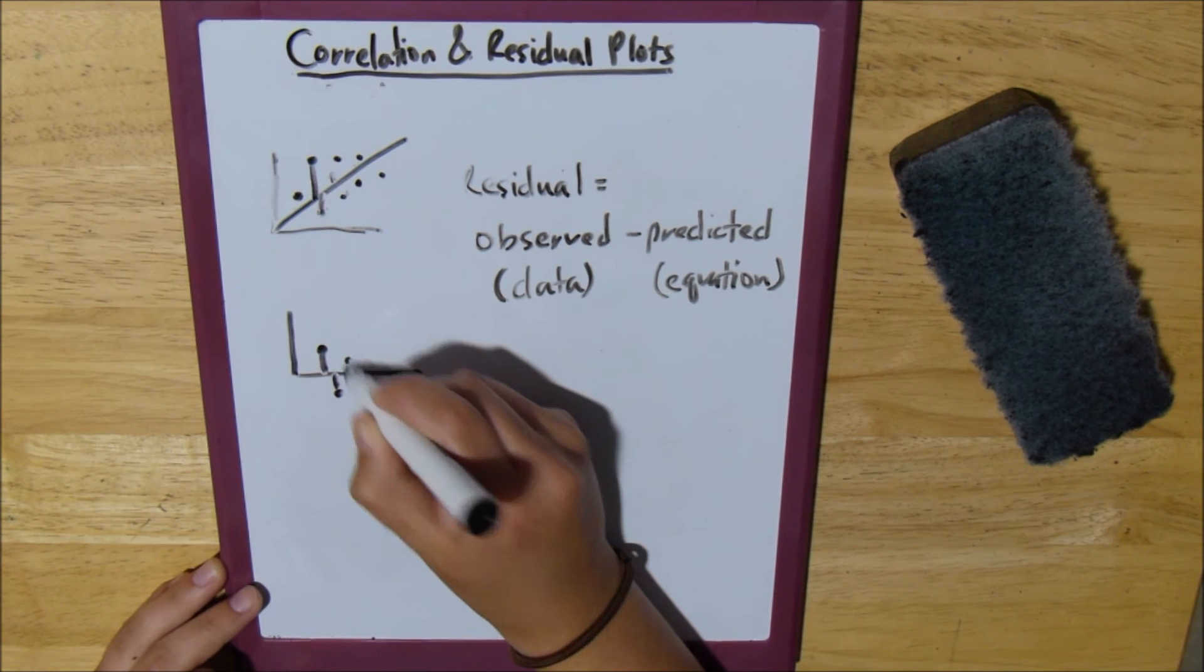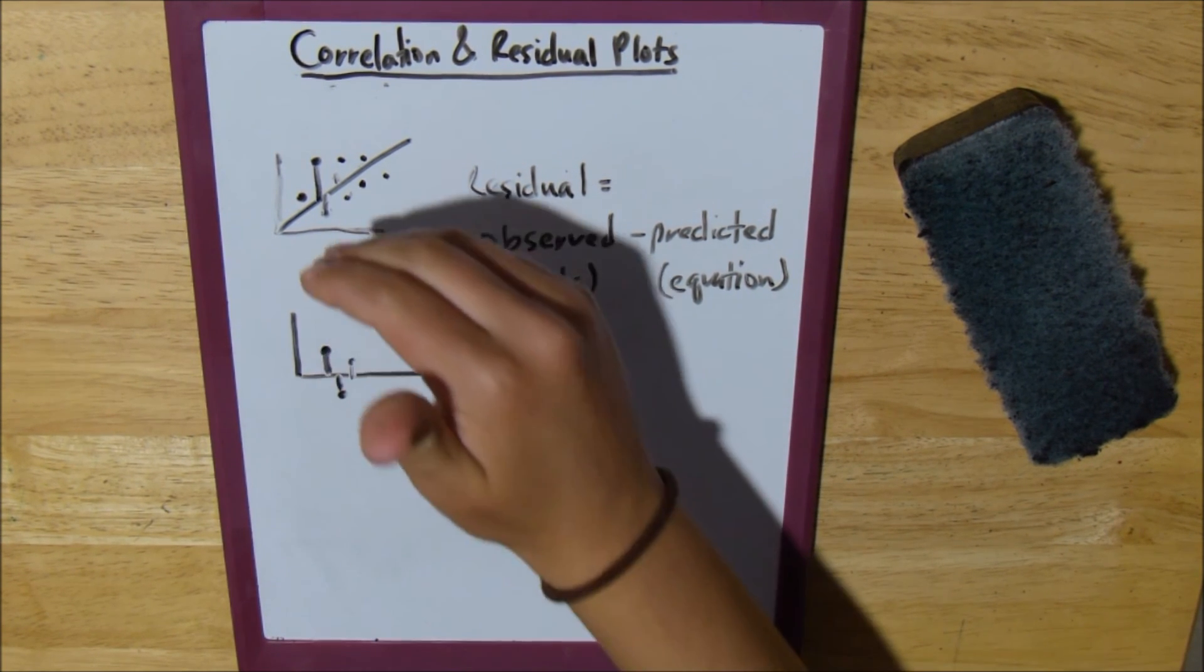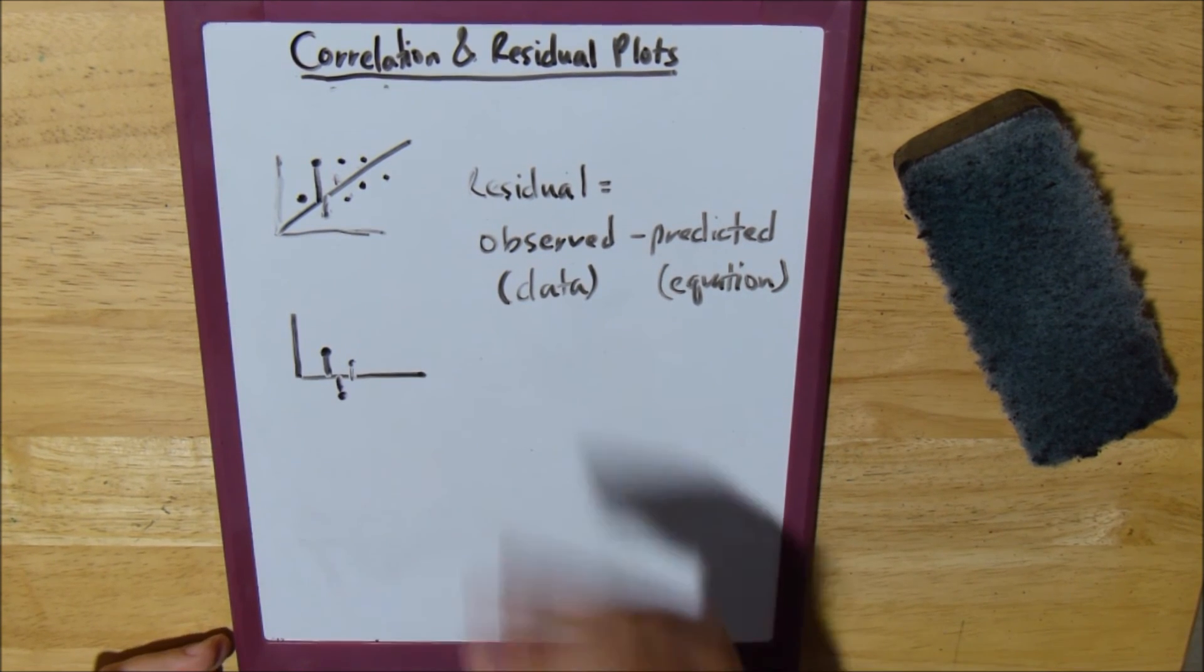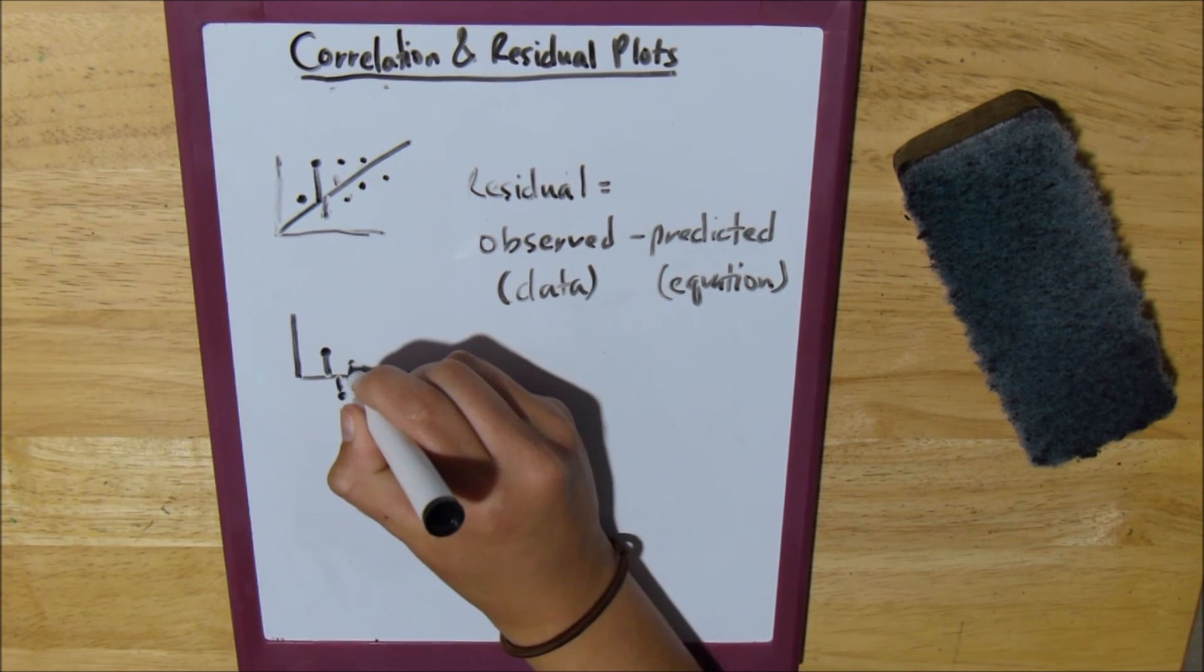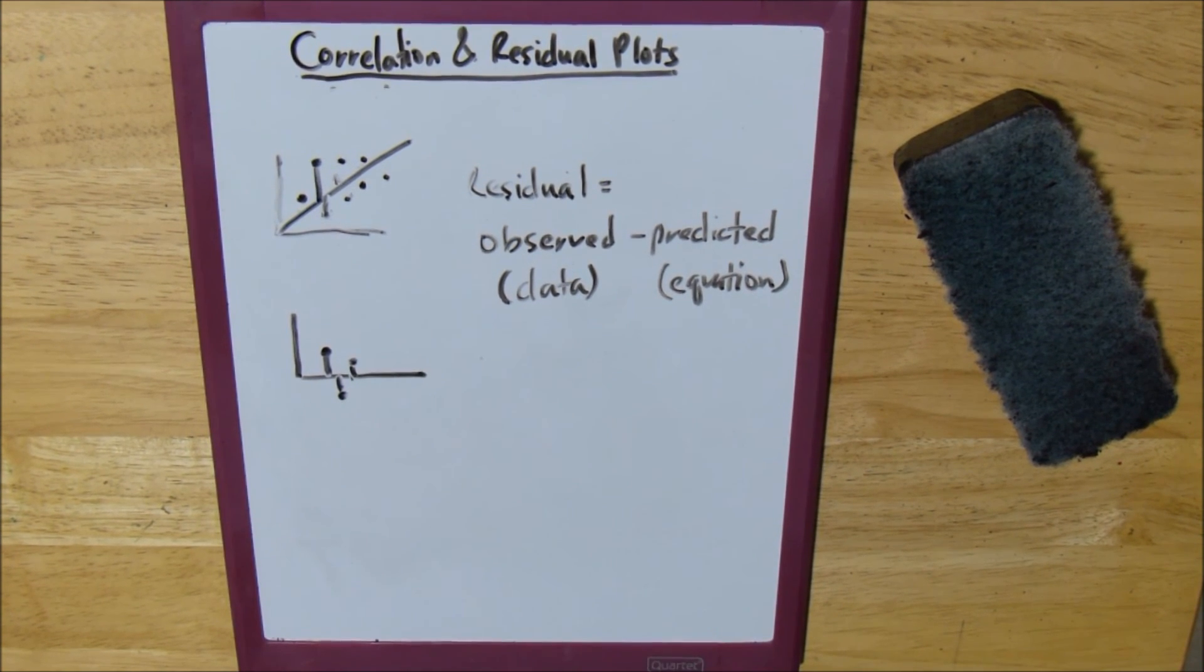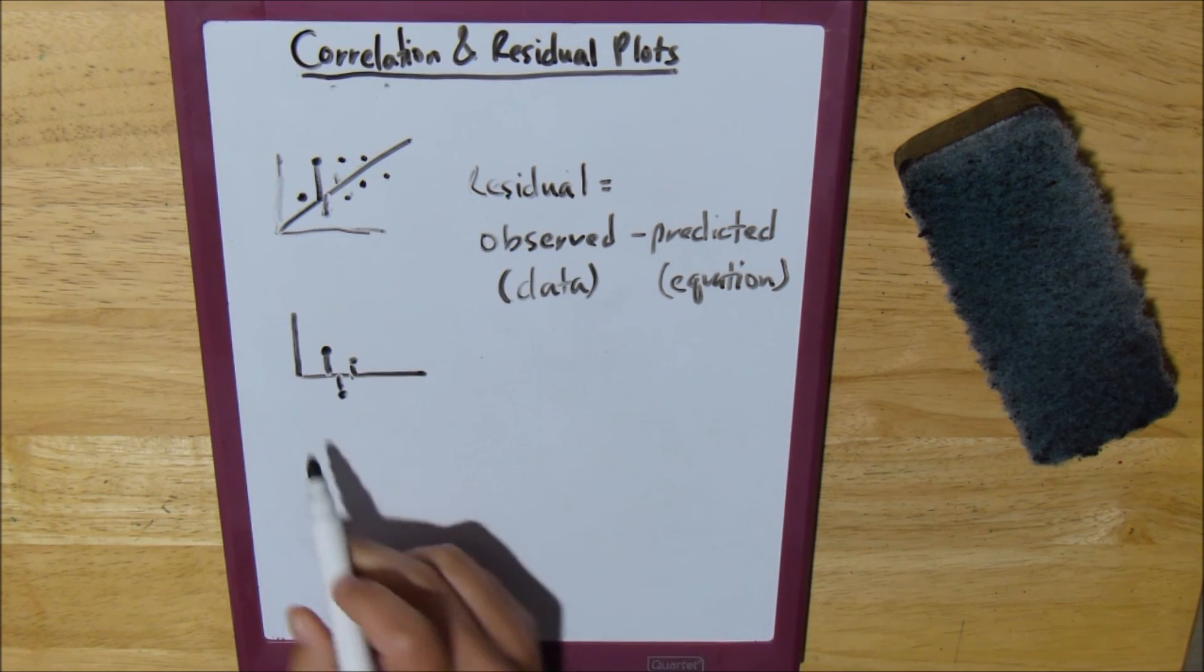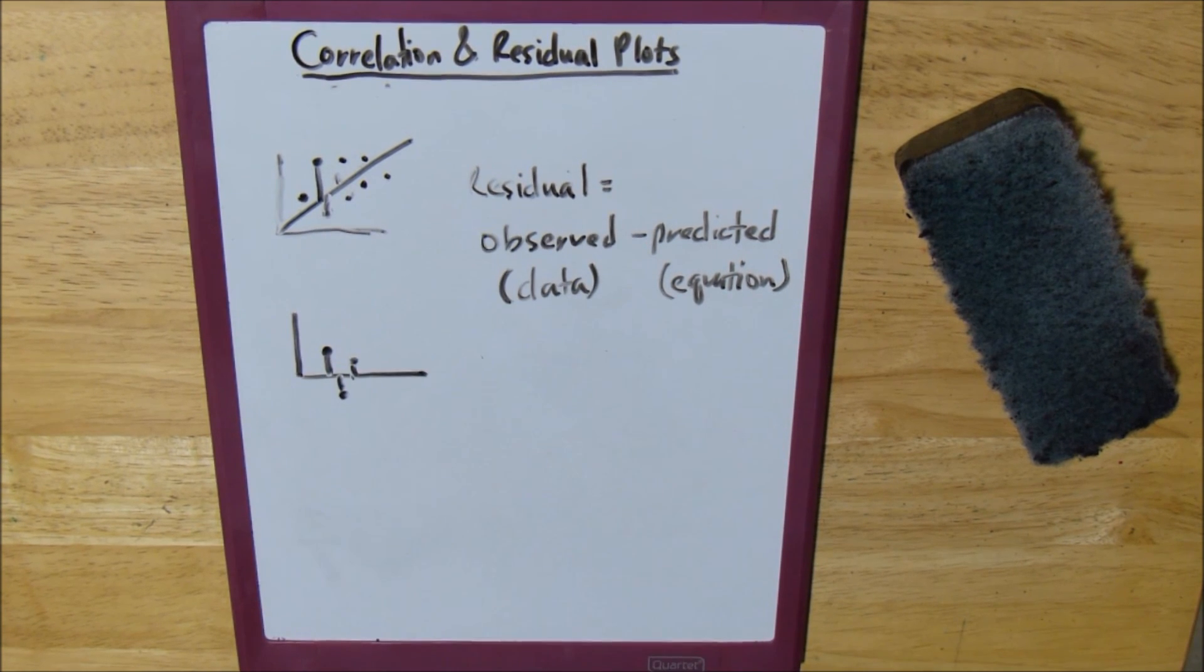And the purpose of residual plots is you basically just see how many points are above the line, and how far away from the line they are, and see how many points are below the line, and see how far away they are. So, any time you have a point below the line, it's always going to be below the x axis. And any time you have a point above the line of best fit, it's going to be above the x axis.